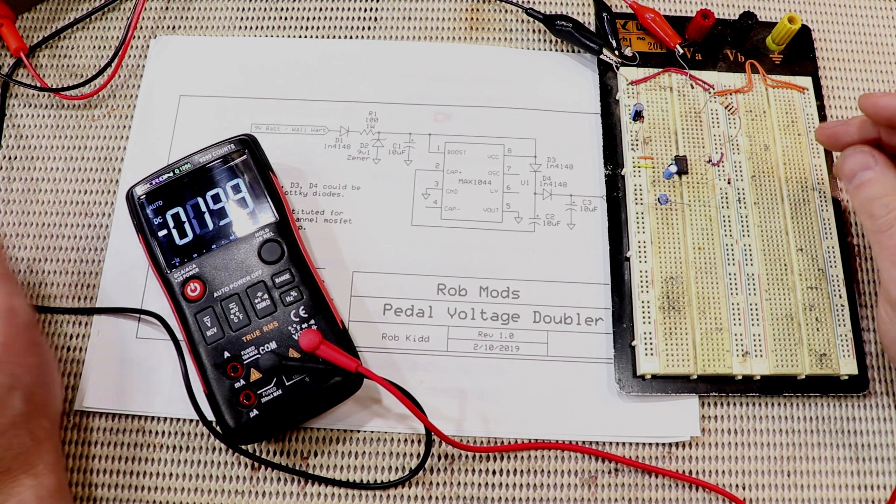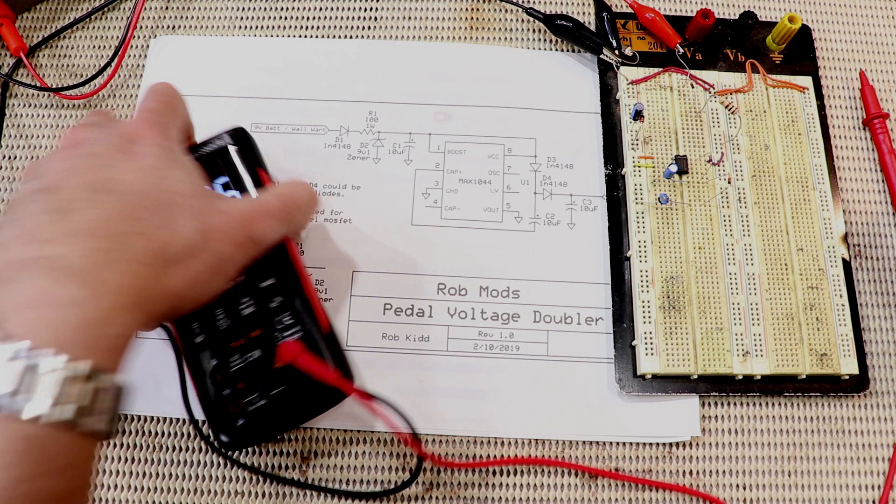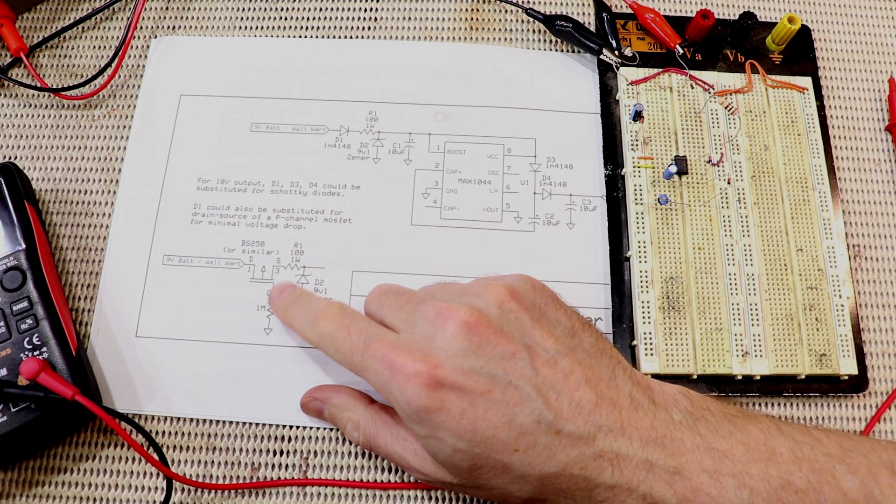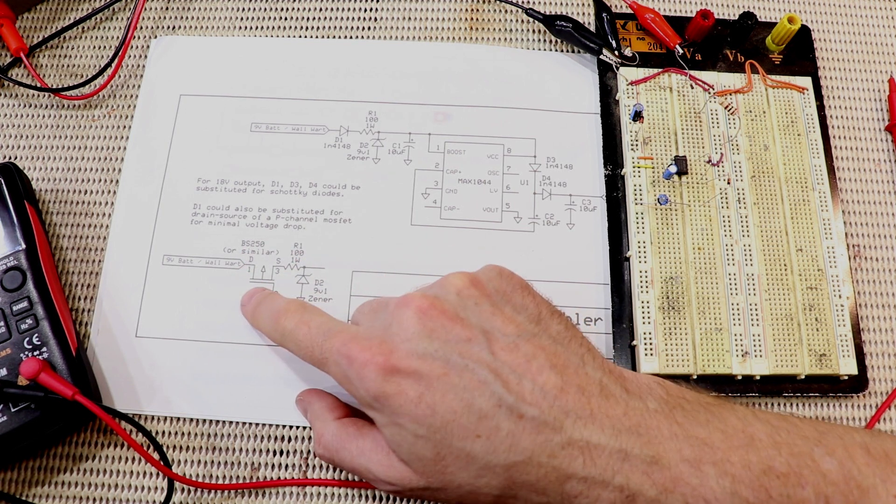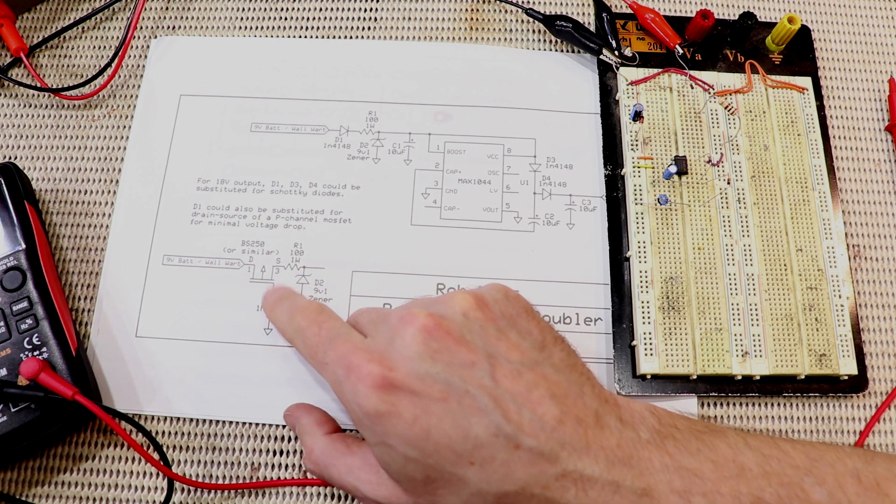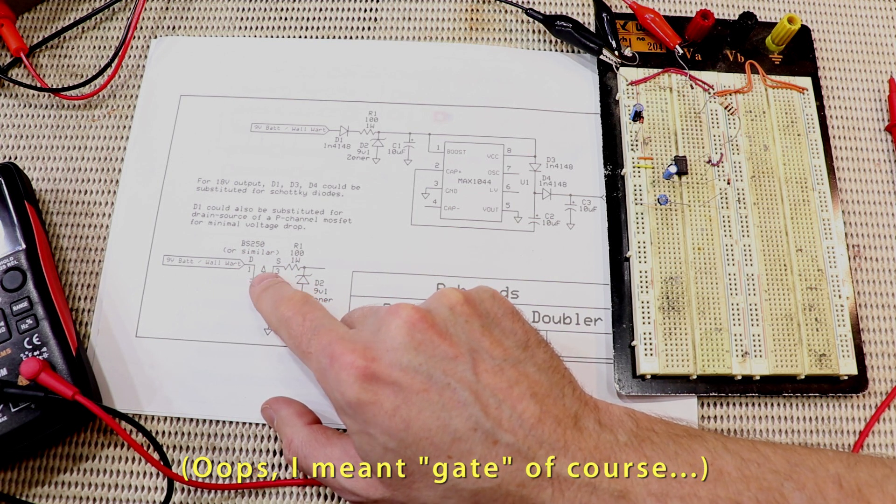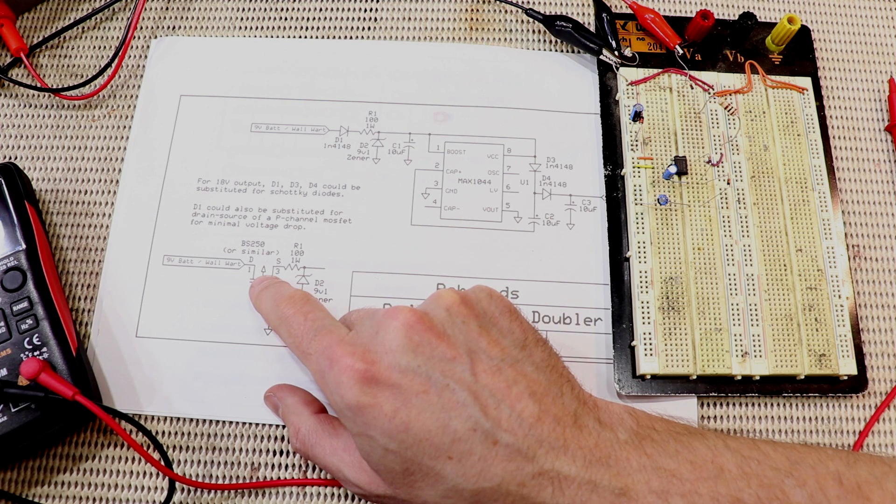If you really want 18 volts you could replace these diodes with Schottky diodes. I've also mentioned another way in fact this is an old trick from the DIY stomp box community you can use a p-channel MOSFET the drain and source from a p-channel MOSFET and as long as you pull the gate down to earth this will act as a protection diode very well as a protection diode its forward voltage will be very close to zero.